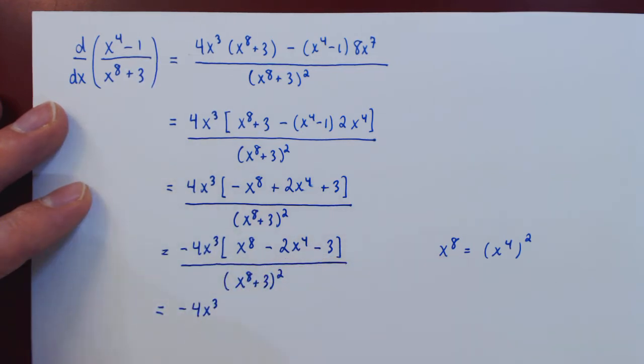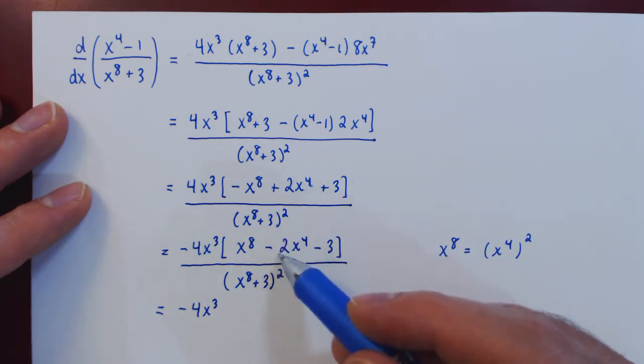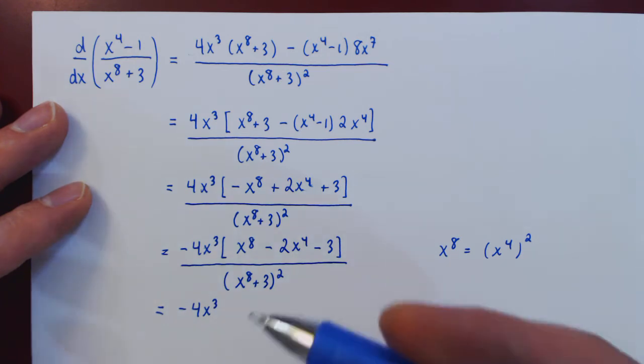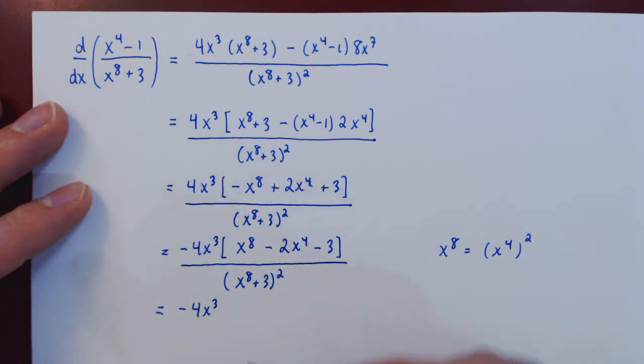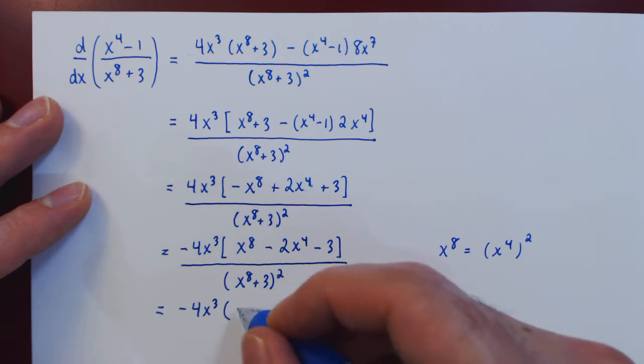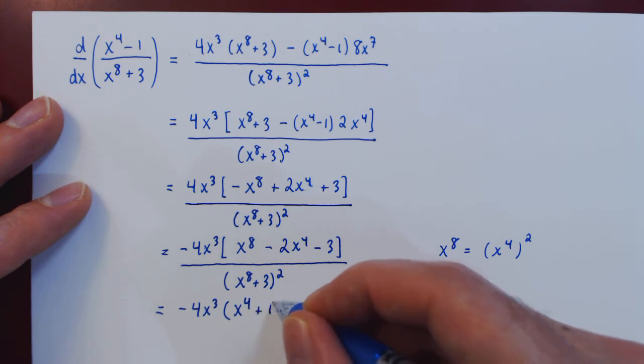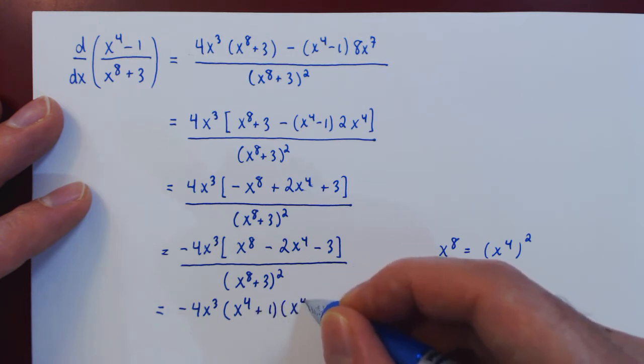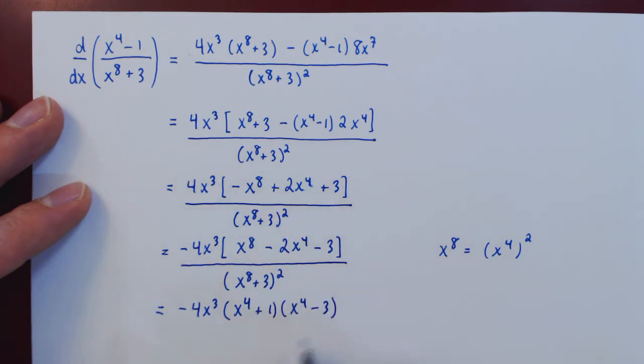So can we find two numbers whose product is negative 3 and whose sum is negative 2? The answer, of course, is positive 1 and negative 3. So we will get x to the 4 plus 1 times x to the 4 minus 3. And if you're not sure, you can verify by multiplying things out in your head. So x to the 4 times x to the 4 is x to the 8, negative 3x to the 4 plus x to the 4, negative 2x to the 4, negative 3. So this does work out.